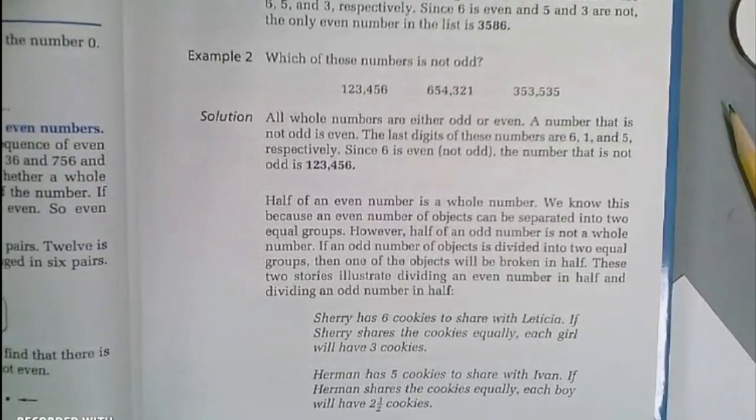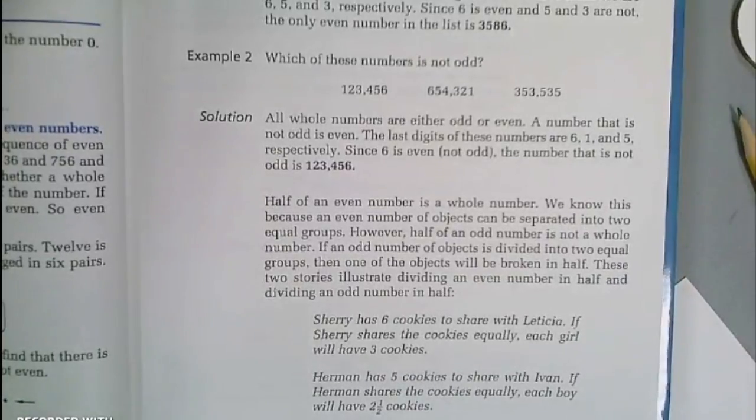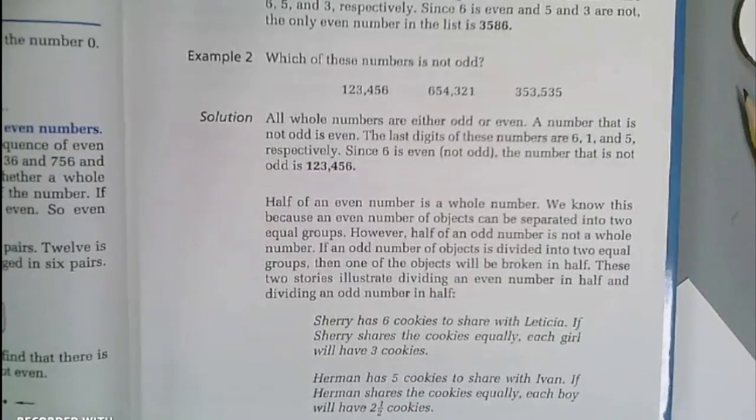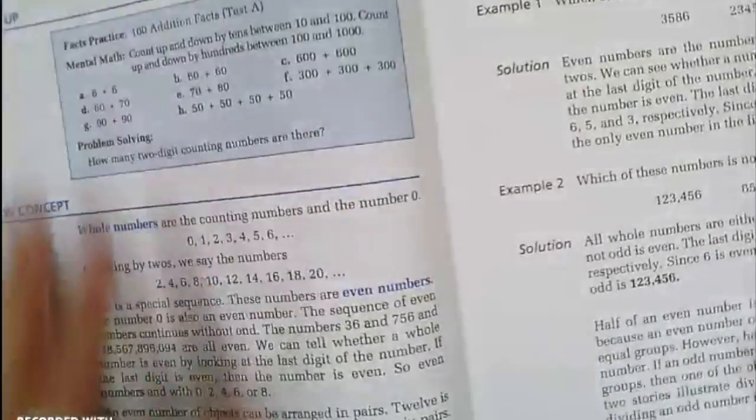Whenever I divide them in half, it's a whole number. But odd numbers, if we divide them into equal amounts, then one of them would have to get cut in half because it's not going to be equal. So let's go back to our index cards.